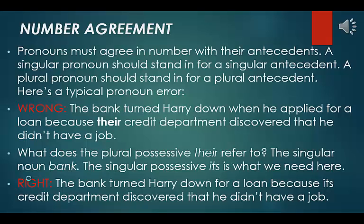Number agreement. Pronouns must agree in number with their antecedents. A singular pronoun should stand in for a singular antecedent; a plural pronoun should stand in for a plural antecedent. Here is a typical pronoun error — wrong: the bank turned Harry down when he applied for a loan, because their credit department discovered that he didn't have a job. The plural possessive 'their' refers to the singular noun 'bank.' Right: the bank turned Harry down for a loan because its credit department discovered that he didn't have a job.